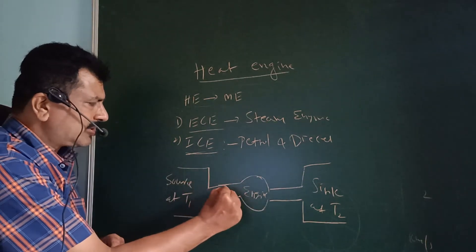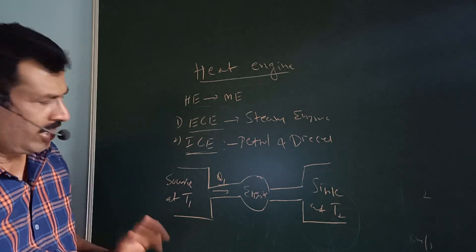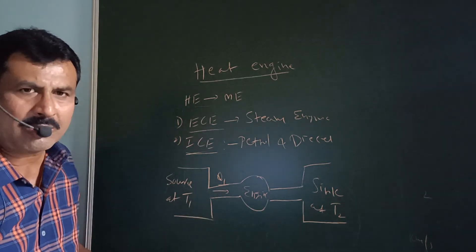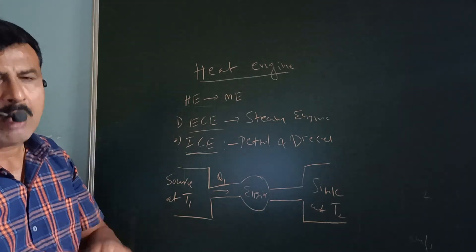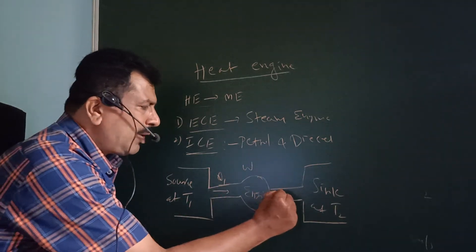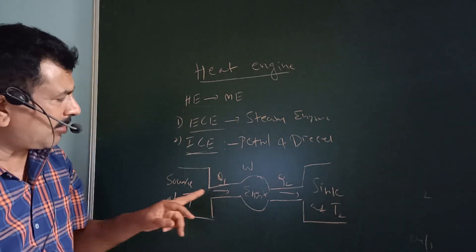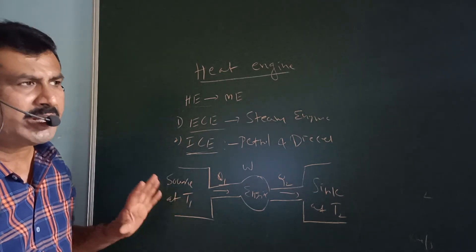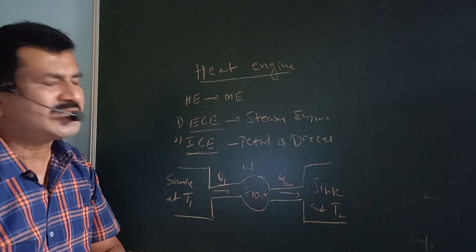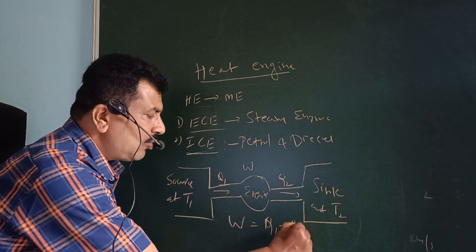The engine absorbs heat Q1 from the source at constant high temperature T1. The piston moves up and down inside the cylinder, so work is done. After the work is done, the amount of heat Q2 is rejected to the sink at constant low temperature T2. Therefore, the work done by the engine W is equal to Q1 minus Q2.